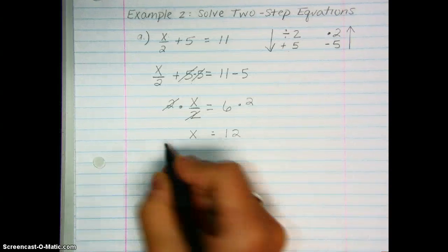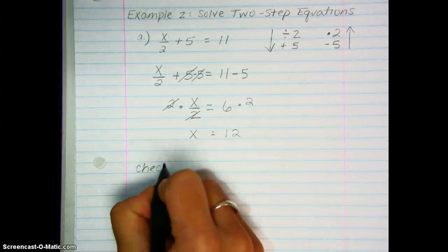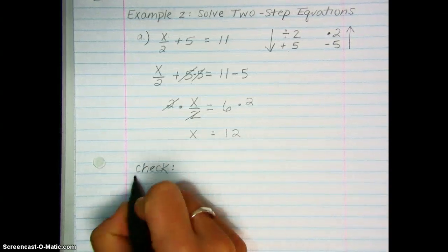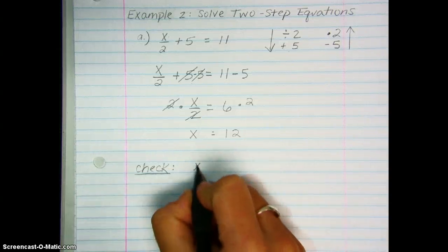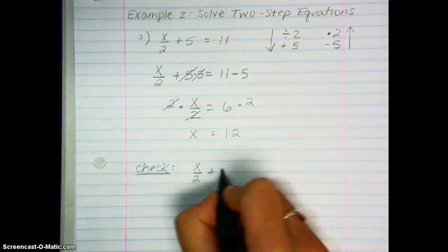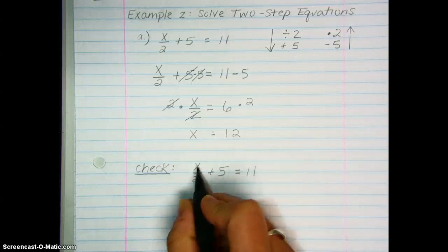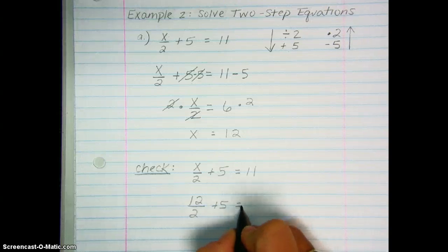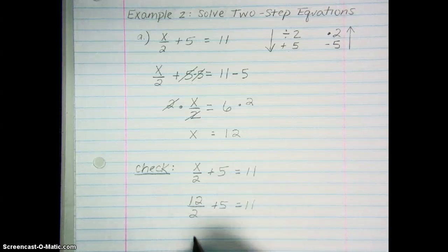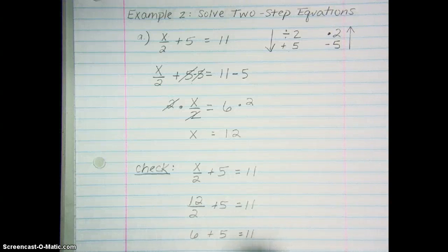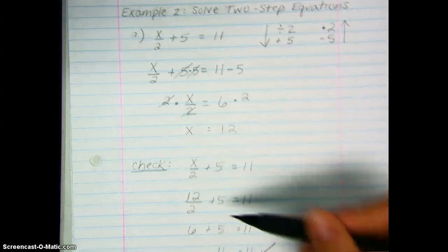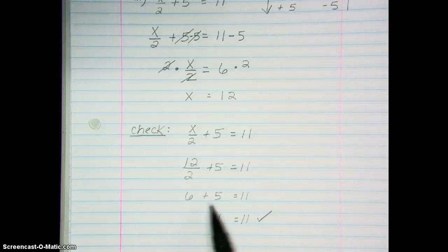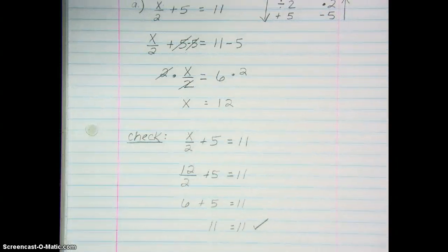You can always check your answers to make sure they are correct. Take the original equation and replace x with the solution you found, and check to see if it works out. 12 divided by 2 is 6, and 6 plus 5 is 11. By plugging in 12 in place of x, it gives us a true statement, so our solution is correct.